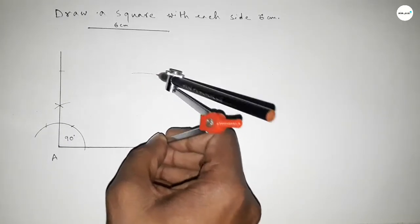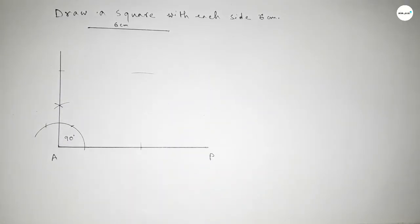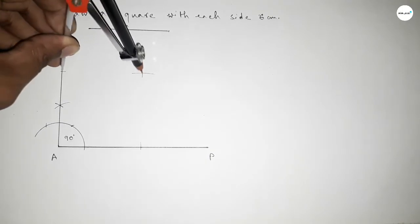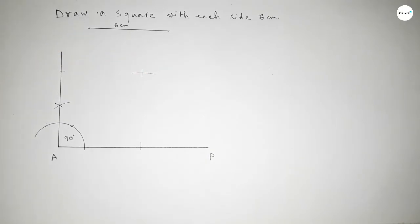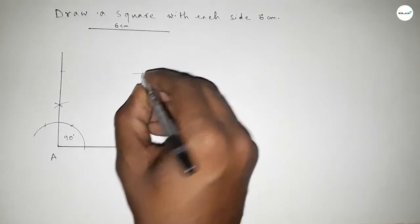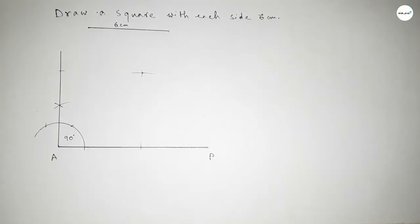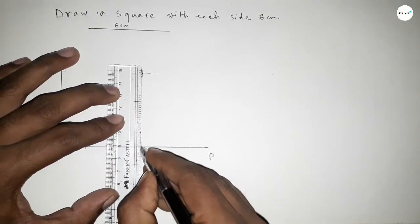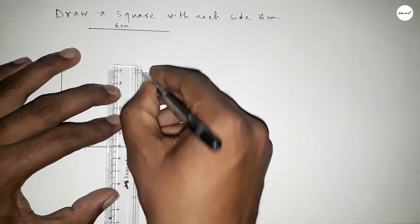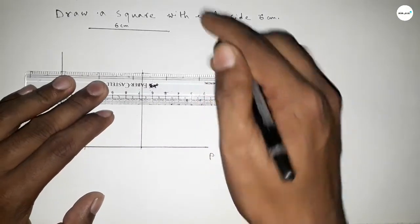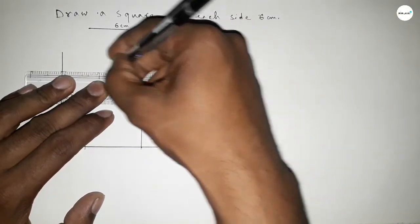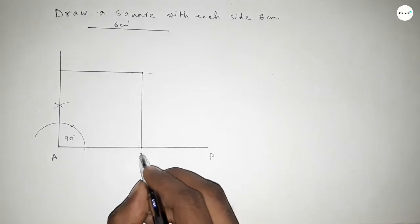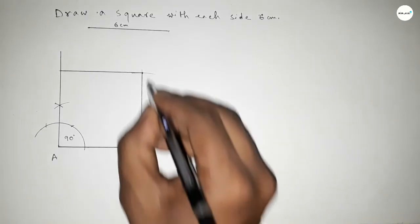Drawing an arc with the same length, putting the compass and cutting here — both curves intersect at a point. Now joining this side and joining this side. Taking this as point B, and this as point C.